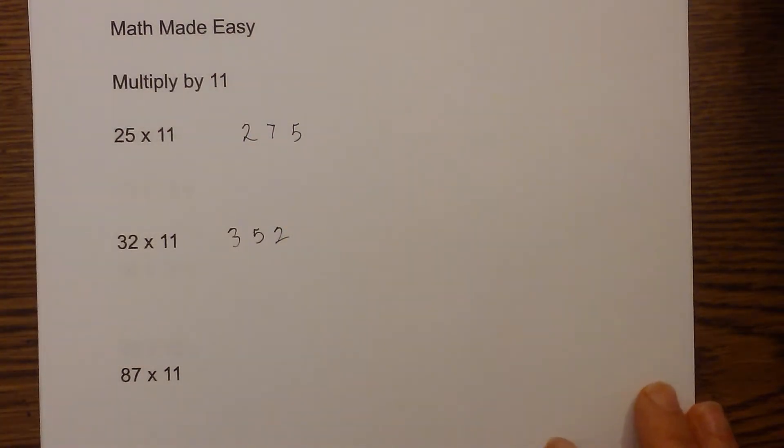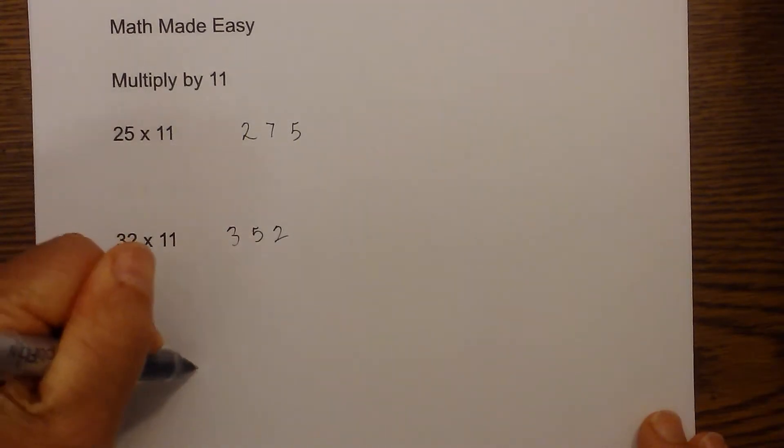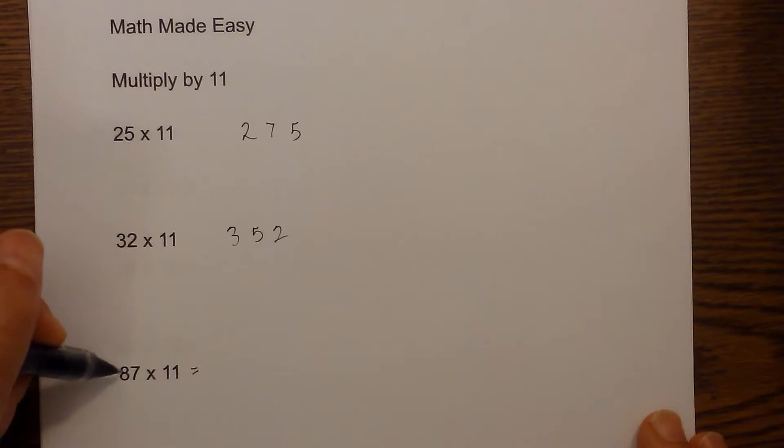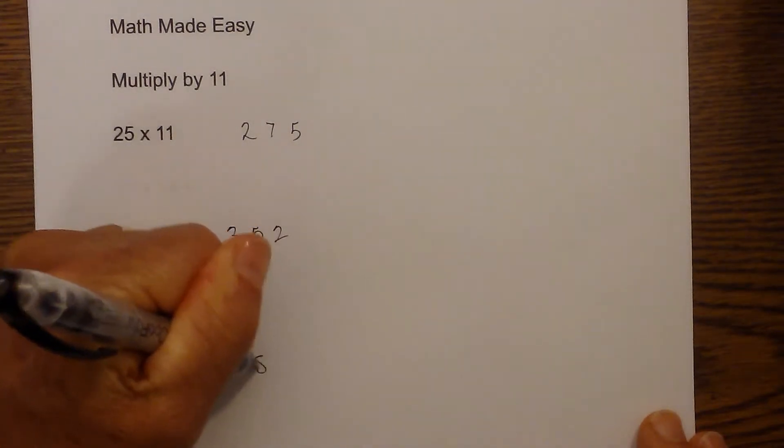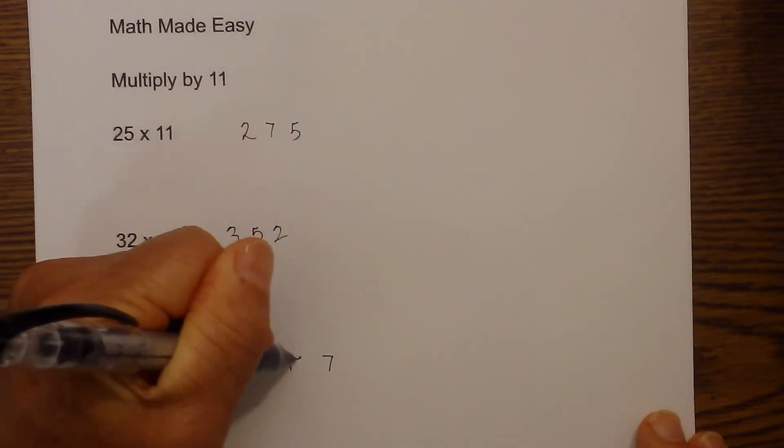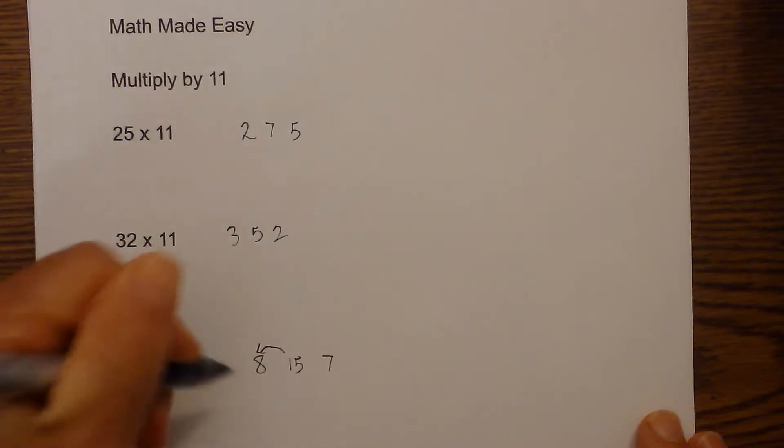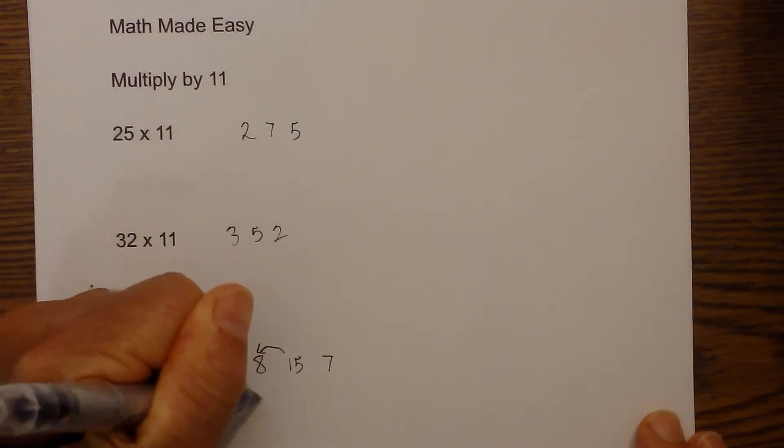Now in this next one I went ahead and gave one that has a little exception to the rule. We have 87 times 11, and so we have 87, and we'll spread these out. Then 7 plus 8 is 15. Well, you can't leave the 15 there, so what we need to do is move the 1 over to the 8, and 8 plus 1 is 9.